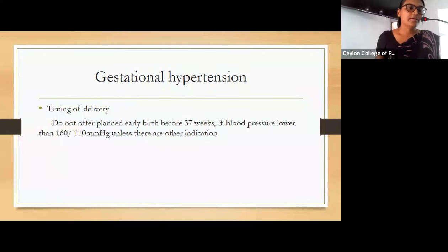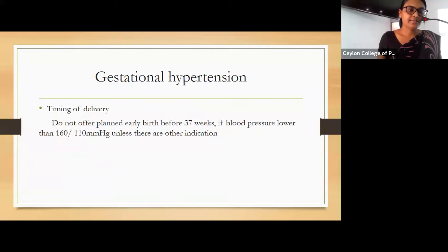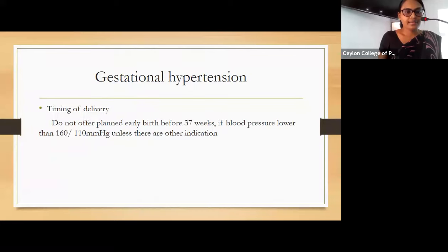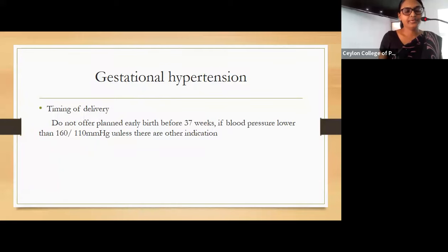Timing of delivery is very important and shared care with the obstetric team should be arranged. We should not offer planned early birth before 37 weeks if blood pressure is lower than 160/110, unless there are other maternal or fetal indications for early delivery.